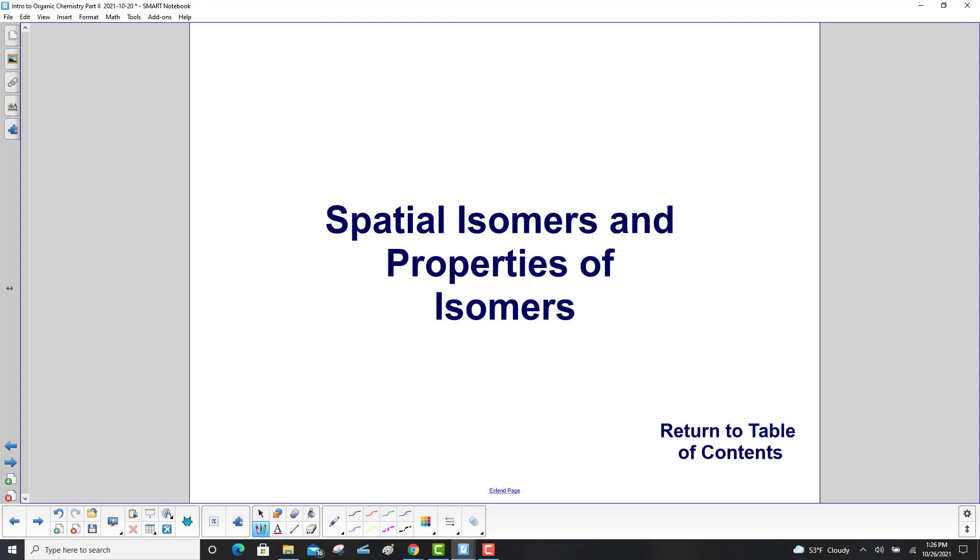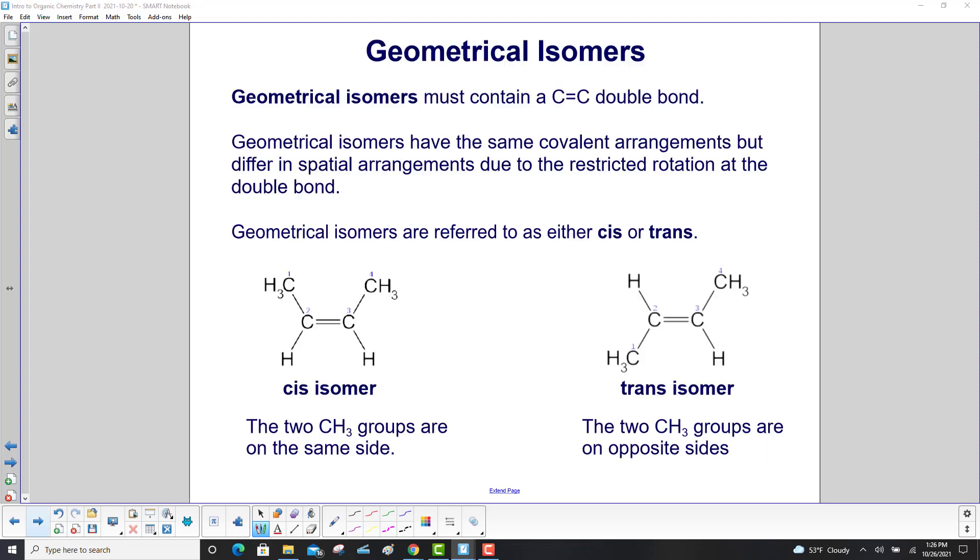Spatial isomers and properties of isomers. Geometrical isomers must contain a carbon-carbon double bond. They have the same covalent arrangements but different spatial arrangements due to the restricted rotation at the double bond. Geometrical isomers are referred to as either cis or trans.